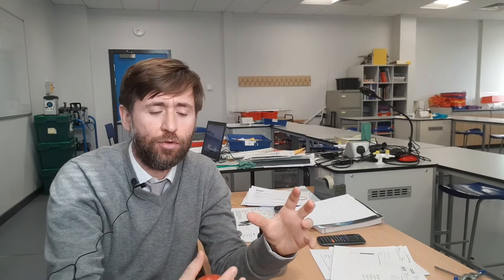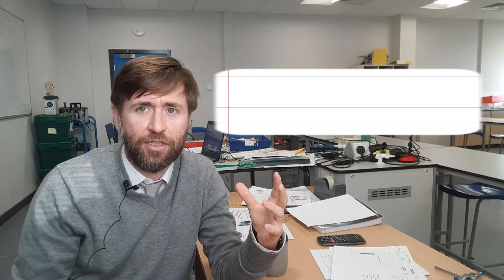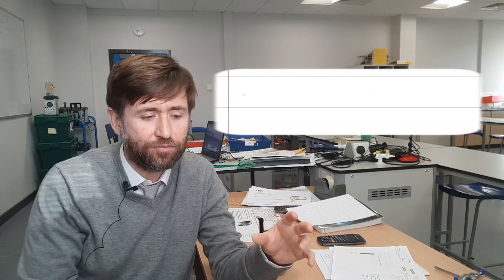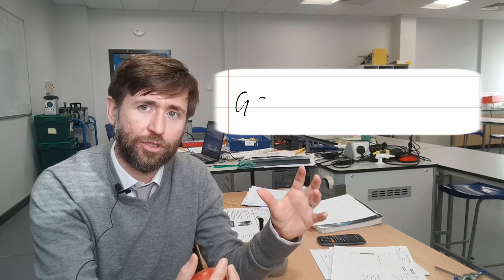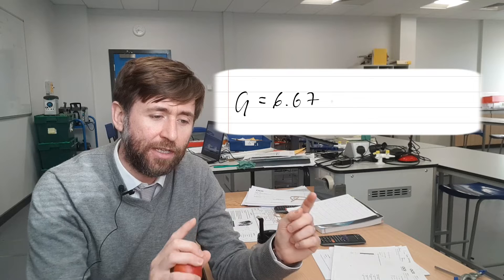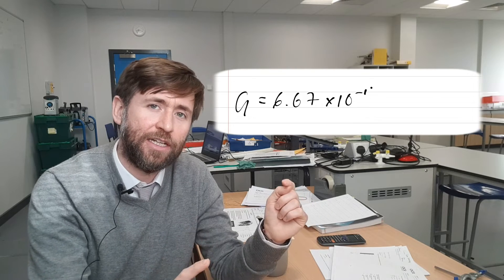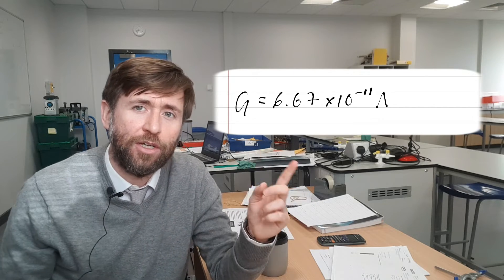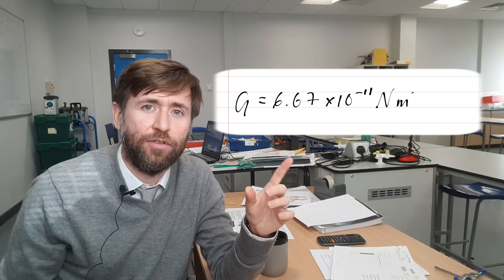And then stationary on the floor he had two even larger balls. And this was in the kind of building the size of a cathedral. So it's a massive experiment. Those two stationary balls would attract the smaller balls by gravity. And in measuring the amount that it rotated he could actually measure that universal constant which we call big G, the constant of universal gravitation.